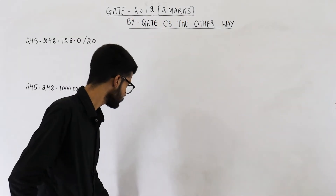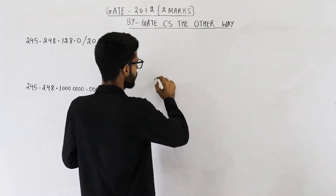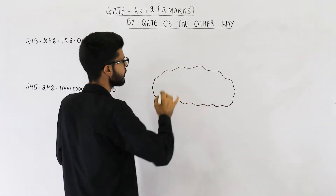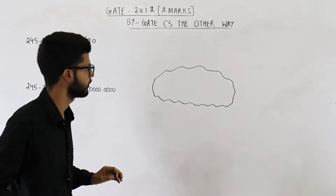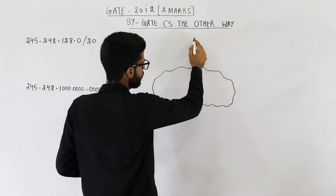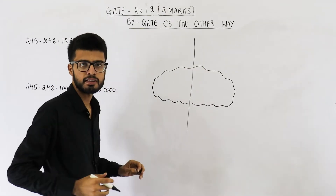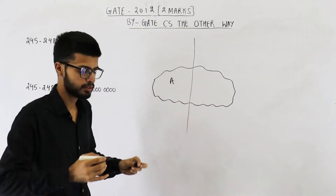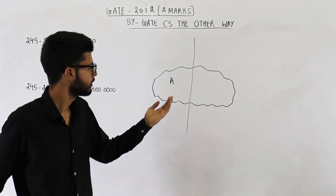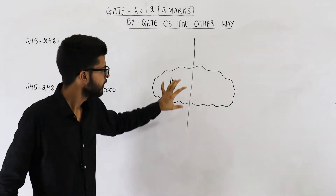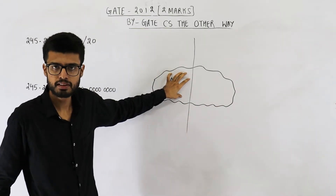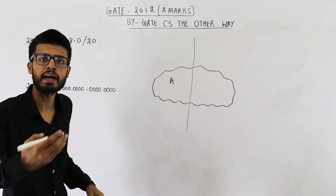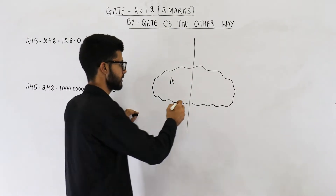Suppose these are all the IP addresses available with the ISP currently. We need to give half of these addresses to organization A. So step one is we will create two subnets. One subnet can be assigned to organization A. The remaining IP addresses will again be divided into two parts.